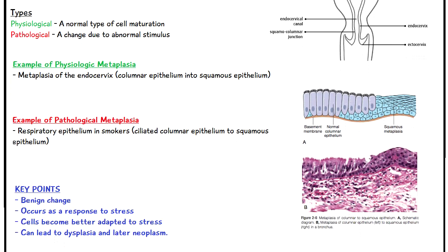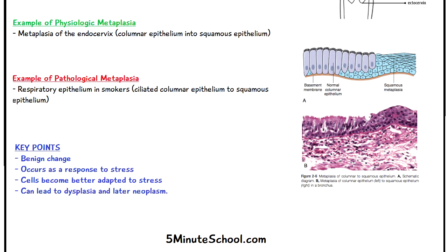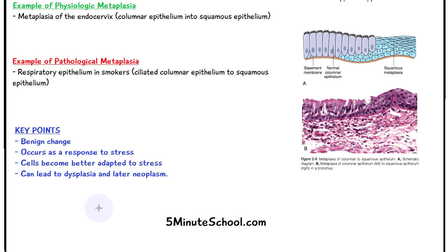An example of pathological metaplasia is the respiratory epithelium in smokers. It's initially supposed to be ciliated columnar epithelium, as shown on the diagram, but the harsh stimulus from cigarette smoke initiates a change to squamous epithelium.